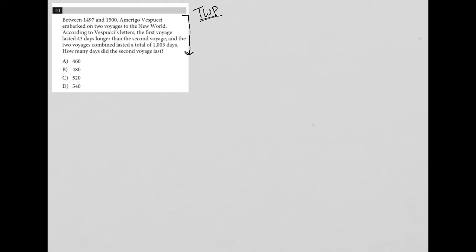The question says between 1497 and 1500, Amerigo Vespucci embarked on two voyages to the New World. So 1497 to 1500, there were two voyages.